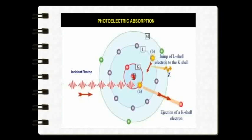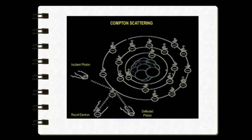About 27 percent of the interactions in a dental x-ray beam exposure involve photoelectric absorption. Next is Compton scattering, which comprises about 57 percent of interactions in the dental x-ray beam exposure. In Compton scattering, a low-energy incident photon tries to interact with the outermost shell electron, or the outermost orbital electron.